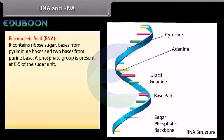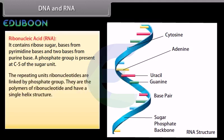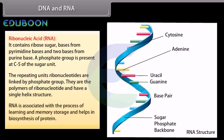Ribonucleic acid (RNA) contains ribose sugar, bases from pyrimidines and two bases from purines. A phosphate group is present at C5 of the sugar unit. The repeating units, ribonucleotides, are linked by phosphate groups. They are the polymers of ribonucleotides and have a single helix structure. RNA is associated with the process of learning and memory storage and helps in biosynthesis of protein.